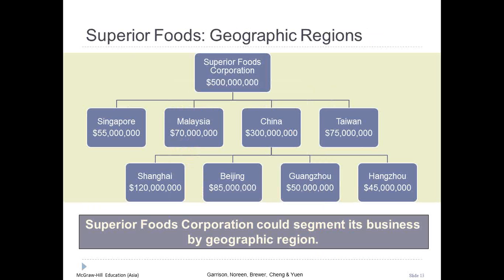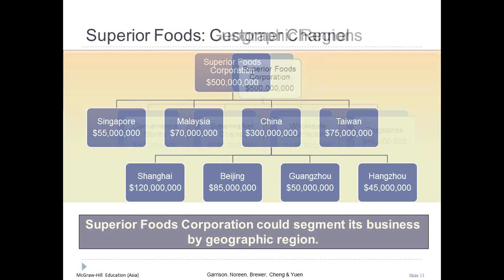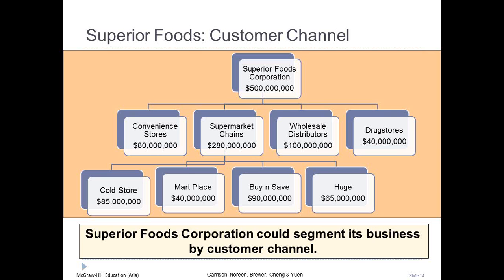Superior Foods could segment its business by geographic region, or by customer channel. In Asia, a similar example is Dairy Farm International, listed on the Hong Kong Stock Exchange. Well-known brands under Dairy Farm include Cold Storage, Giant, Shop and Save, Marketplace, Guardian, Manning, 7-Eleven, GNC, Welcome, IKEA, and Star Mart.